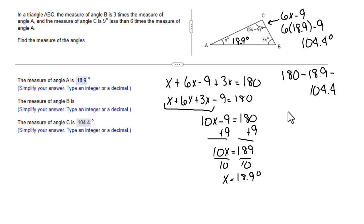Or we notice that angle B is three X. All we have to do is substitute 18.9 in for X and multiply. And when we do that, we end up with 56.7 degrees.